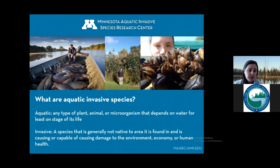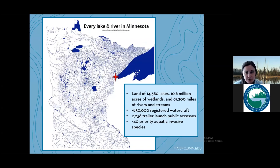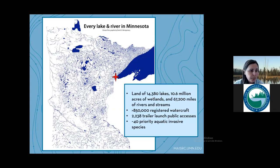$123 billion per year is the highly conservative estimate of the annual cost of damages that AIS pose to infrastructure like hydropower plants, water supplies, and aquaculture. Of course there are a lot of less tangible impacts to quality of life on our Minnesota lakes and how we recreate on them. Here in the land of 14,380 lakes, our water resources are of utmost importance. Just about anybody who can afford it has at least one boat, and we have between 850,000 and 900,000 registered watercraft in the state, with over 2,200 public launches accessible to trailers.